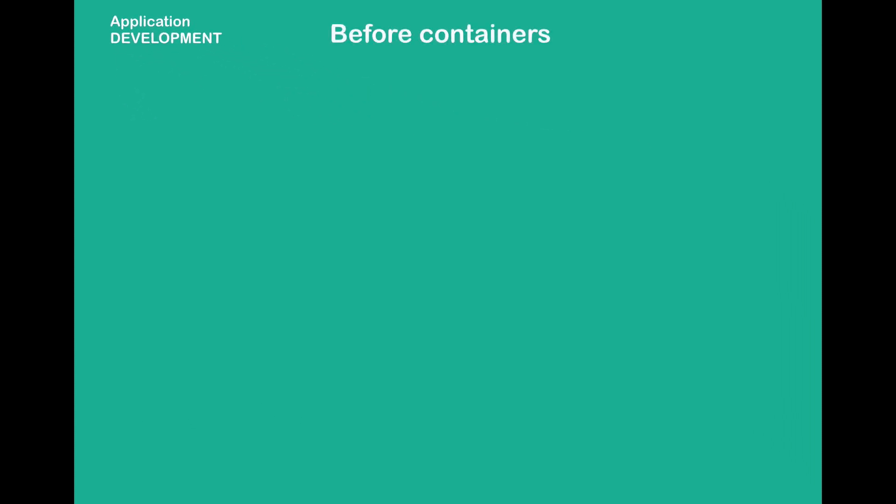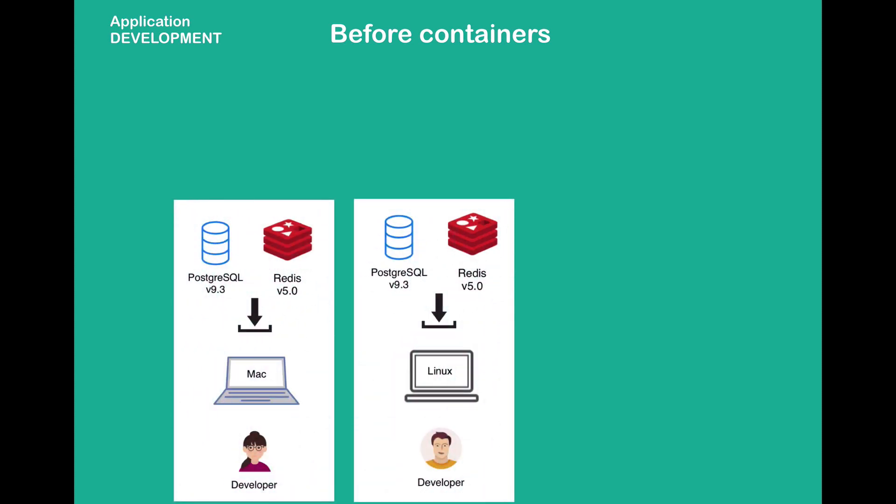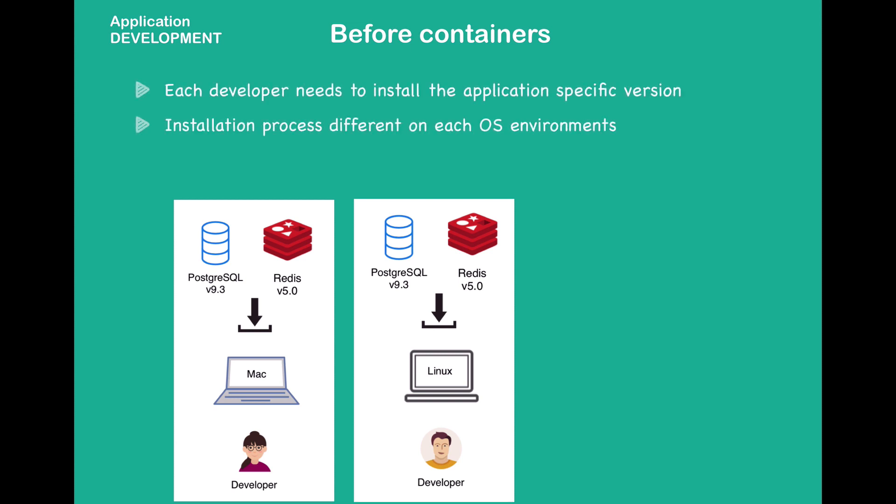How did we develop applications before containers? Usually when you have a team of developers working on an application, you would have to install most of the services on your operating system directly. For example, if you're developing a JavaScript application and you need PostgreSQL and Redis for messaging, every developer would have to go install the binaries of those services, configure them, and run them on their local environment. Depending on which operating system they're using, the installation process would look different.